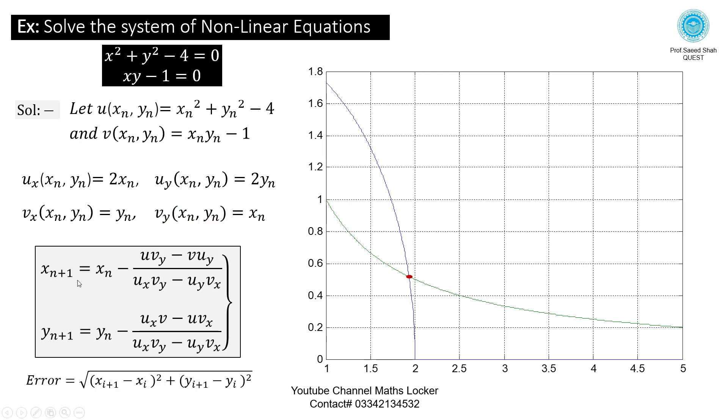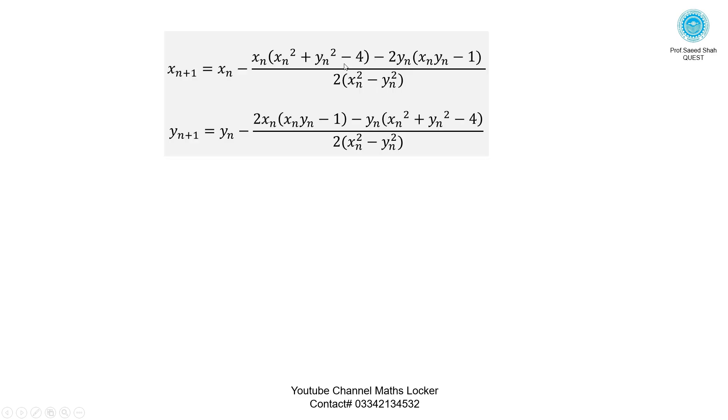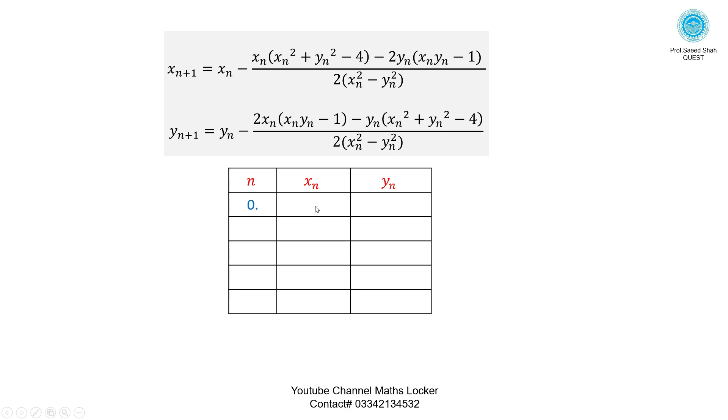Now the formula is here. So we are treating all values in the formula. And this is the error formula. Then the formula becomes in this formula. Take the table for the iteration. From the graph we have a value, initial guess x0 is equal to 2 and y0 is equal to 0.